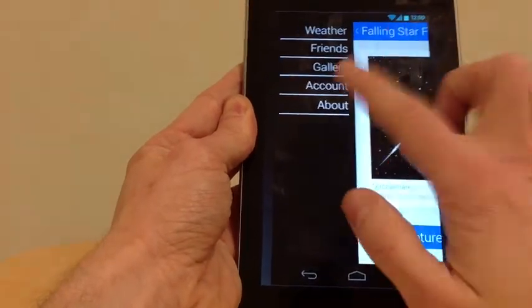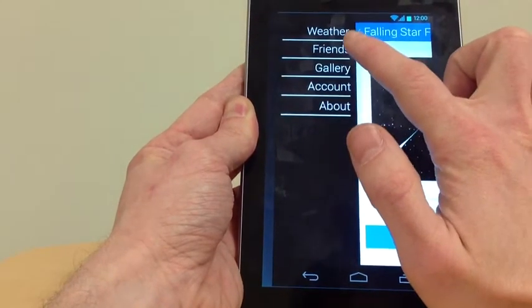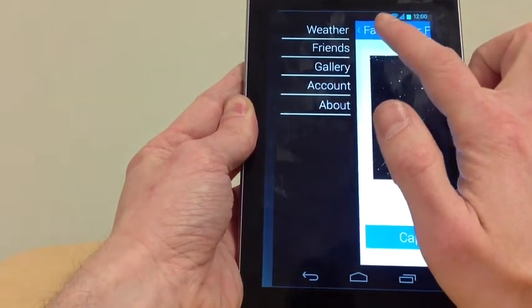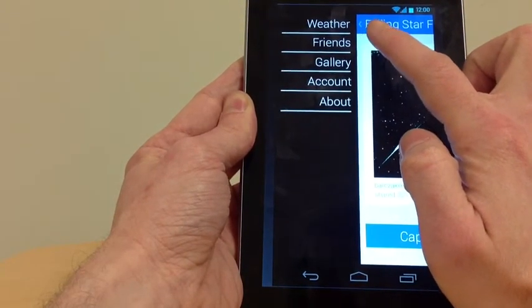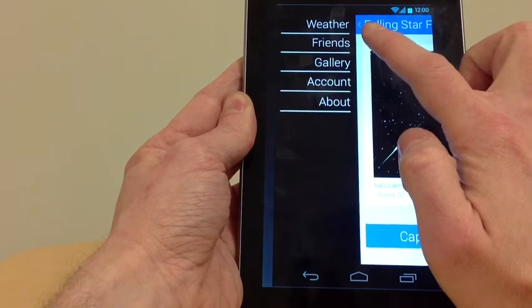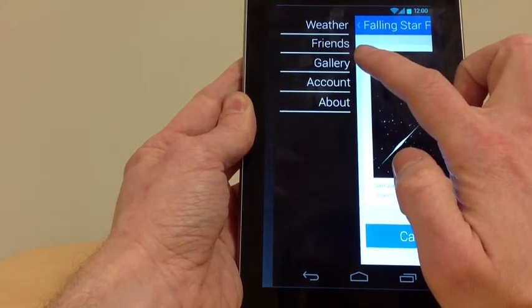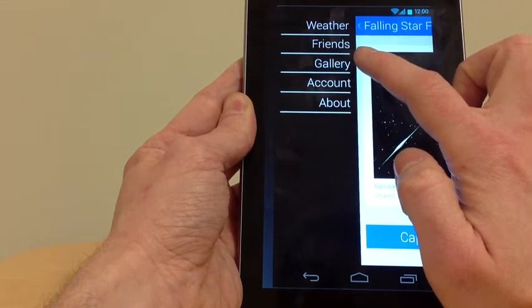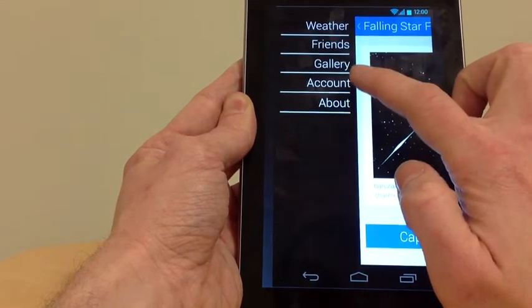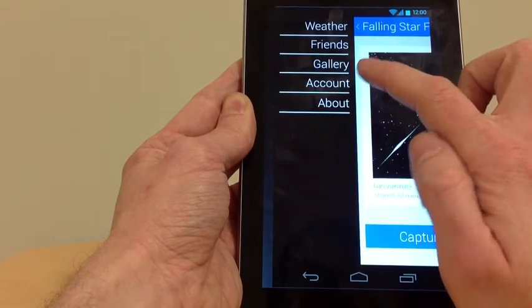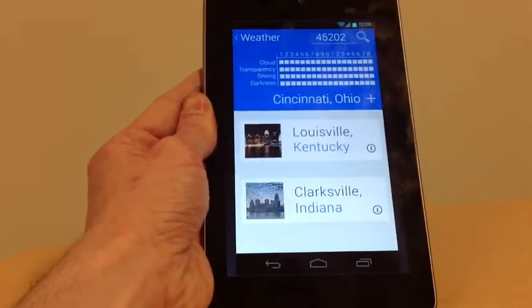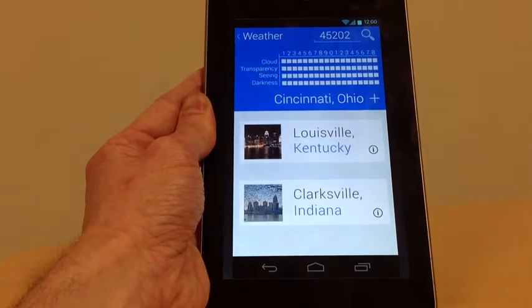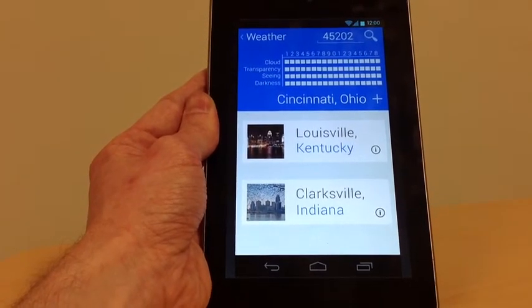So, you see here we've got a menu where you can check the weather for a site that you plan to go to. You can actually sign up with Facebook or other social media to coordinate or send results to friends. You can go see a gallery of images you have taken or downloaded that other people have taken. And you can set up your account information to coordinate location observations and about information. The weather actually allows you to coordinate the clear sky chart for your area to know if it's worth going out into the country to do an observation.